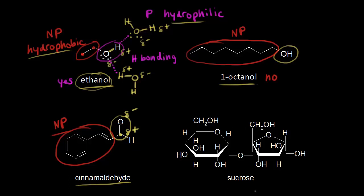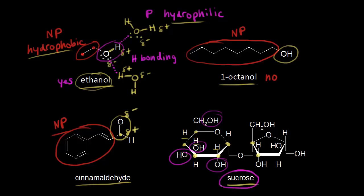Next, let's look at sucrose. On the right is one way to represent the sucrose compound. We see lots of carbons and hydrogens in the rings, so at first you might think it's nonpolar. But sucrose has lots of OH groups — let me circle a few of them. All of these OH groups mean many opportunities for hydrogen bonding. Because of all those opportunities for hydrogen bonding, sucrose is soluble in water, which we know from experience — sugar dissolves in water.